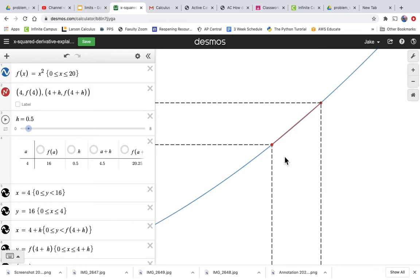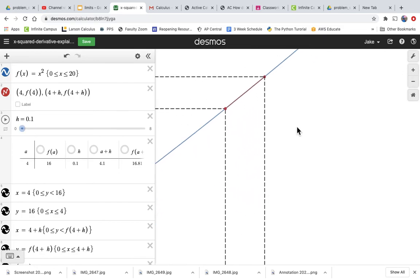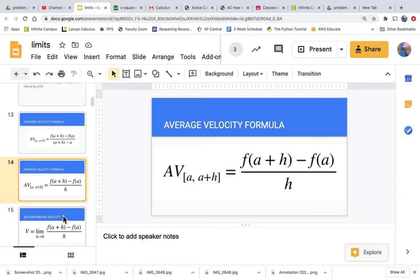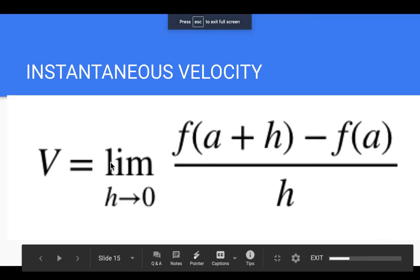to the point we're interested in. It's getting very close to that a, and we can bring this secant line closer and closer by making h smaller and smaller. You can see that we could make h even smaller, right? We can make it infinitesimally small, and hopefully what you see us doing is this: we are making h approach zero.